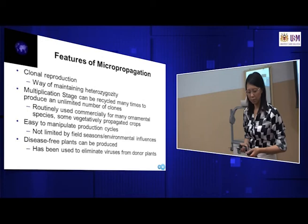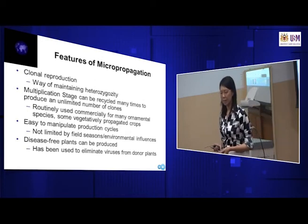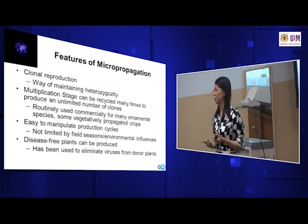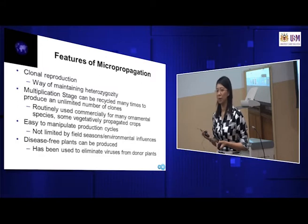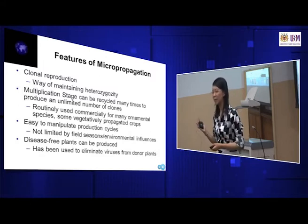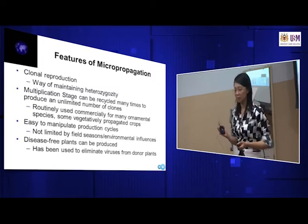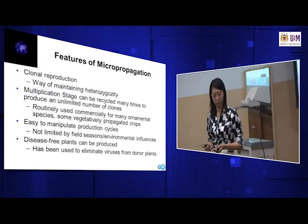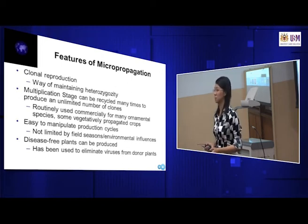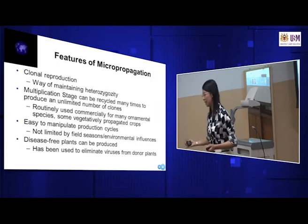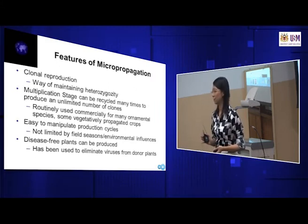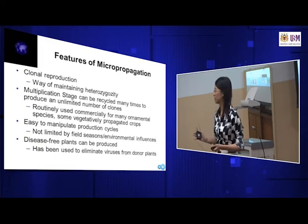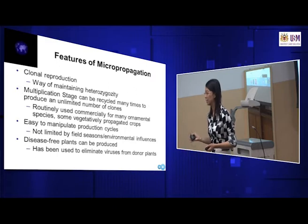Features of micropropagation and microcutting: clonal reproduction — the multiplication stage can be recycled many times. From one explant, we can cut to many smaller parts and grow them into smaller plants, so one explant can produce many, many plants. Production cycles are easy to manipulate because all conditions are controlled. Disease-free plants can be produced — this depends on the explant. If the mother plant is clean, then under all these controlled conditions, it will also produce clean offspring.